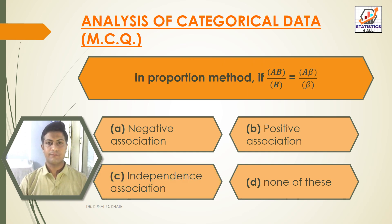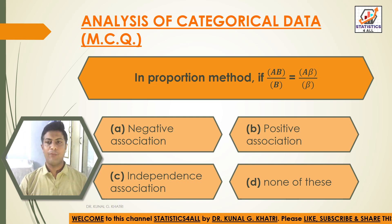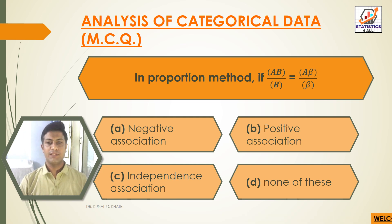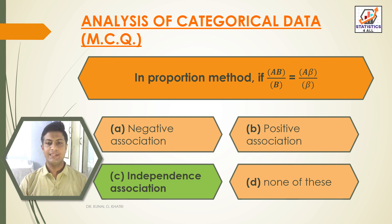Next question: in the proportion method, if AB divided by B is equal to Aβ divided by β — options are: option A: negative association, option B: positive association, option C: independence association, option D: none of these. The answer is option C, that is independence association. If AB/B equals Aβ/β, then it is independence association.